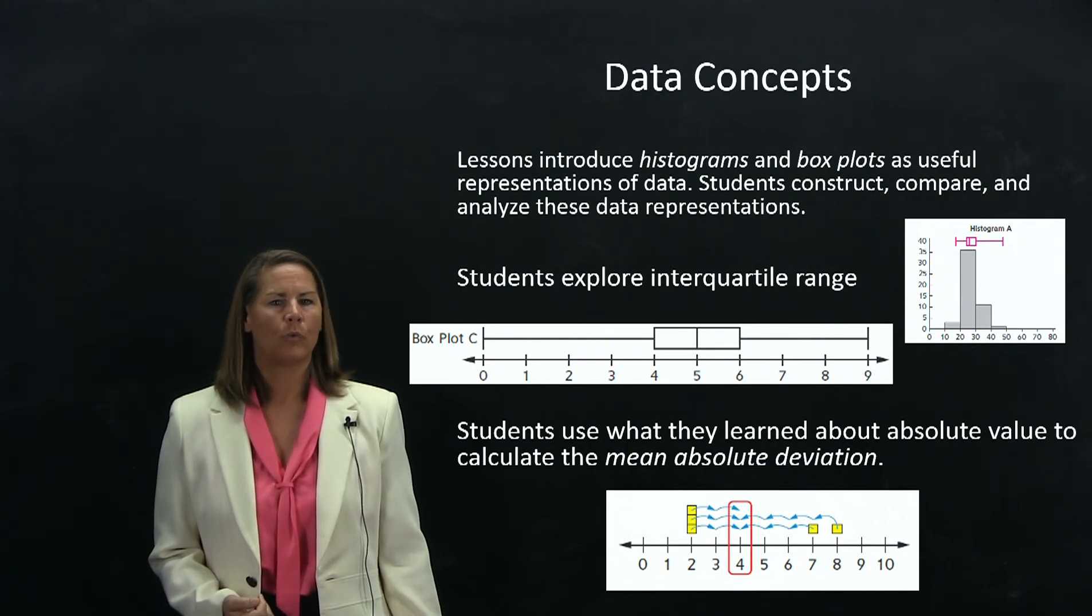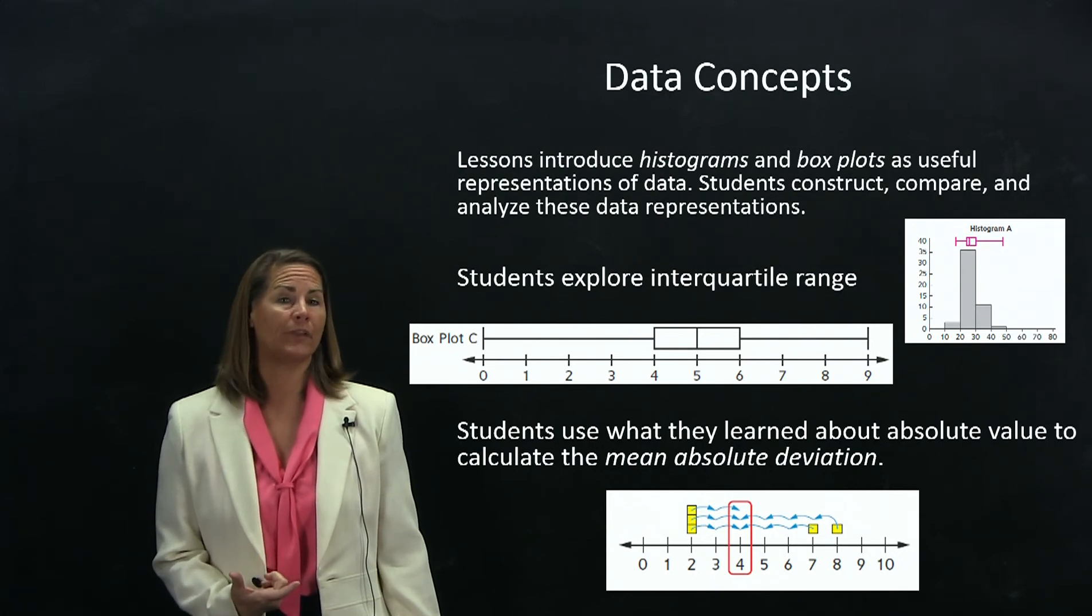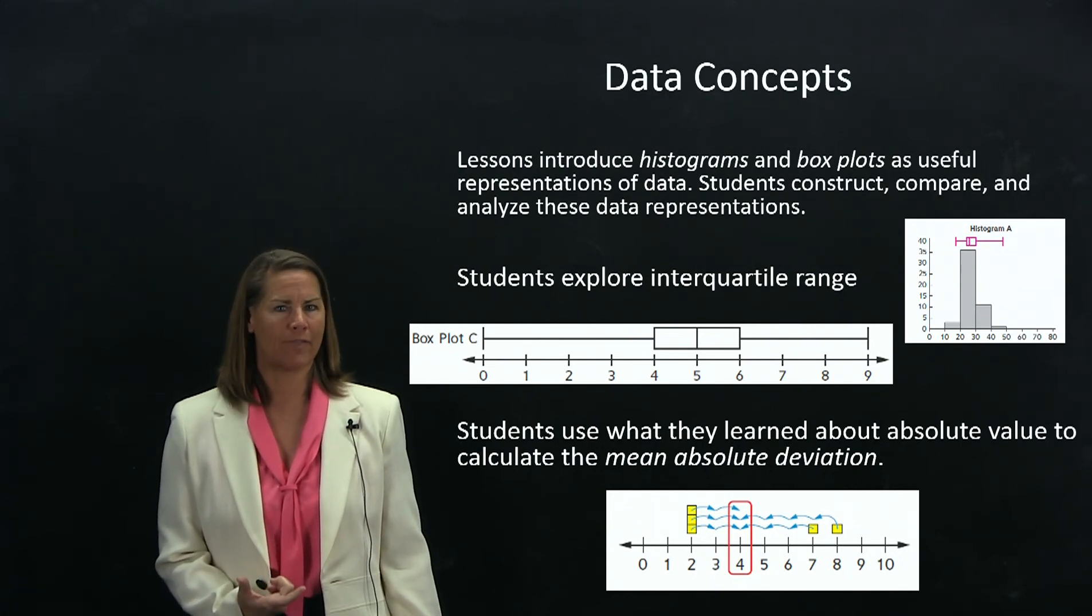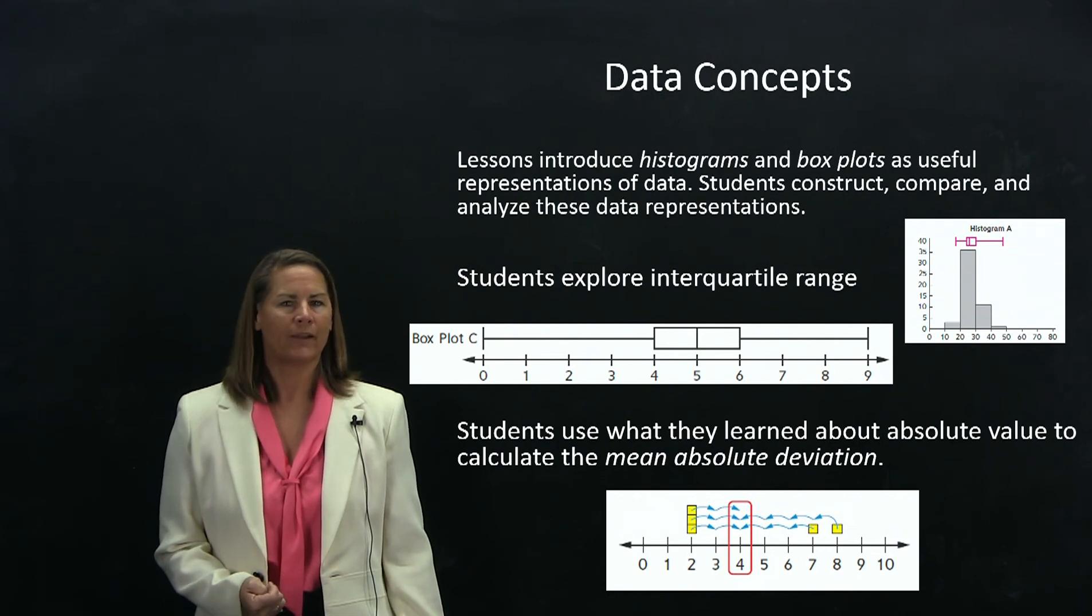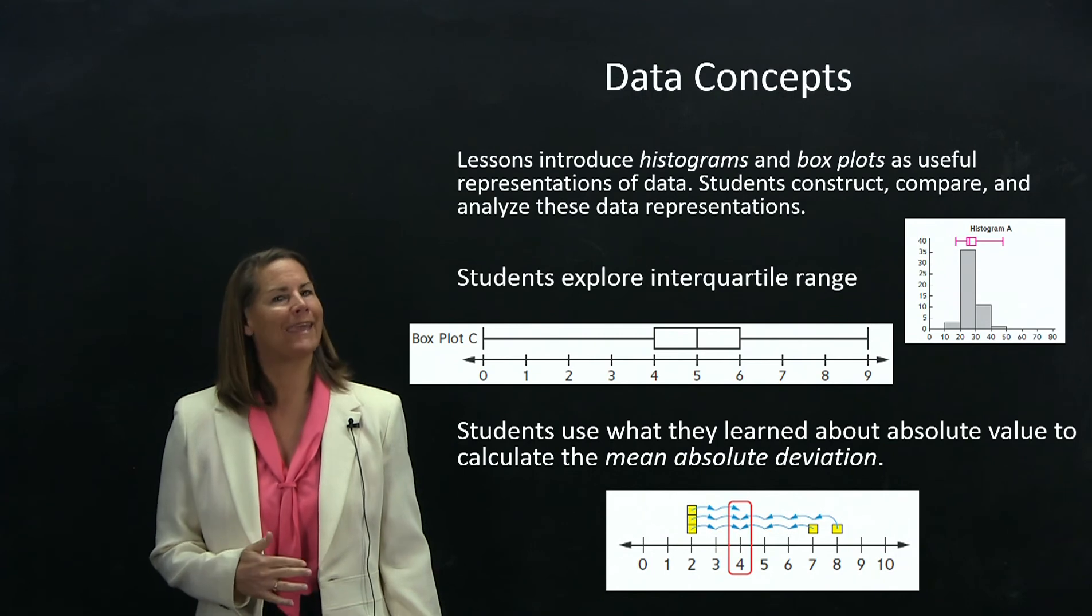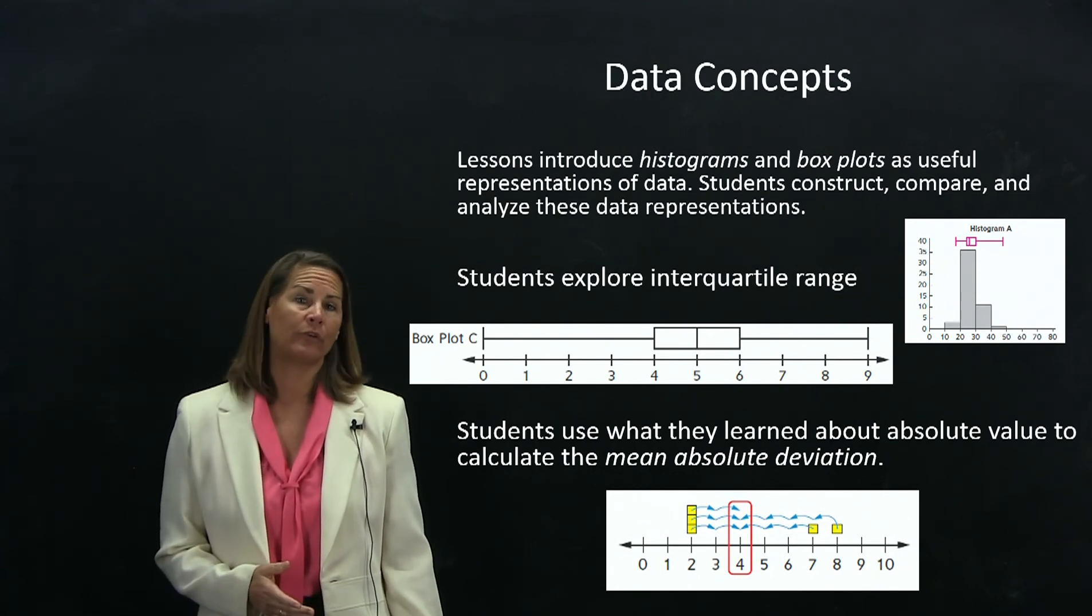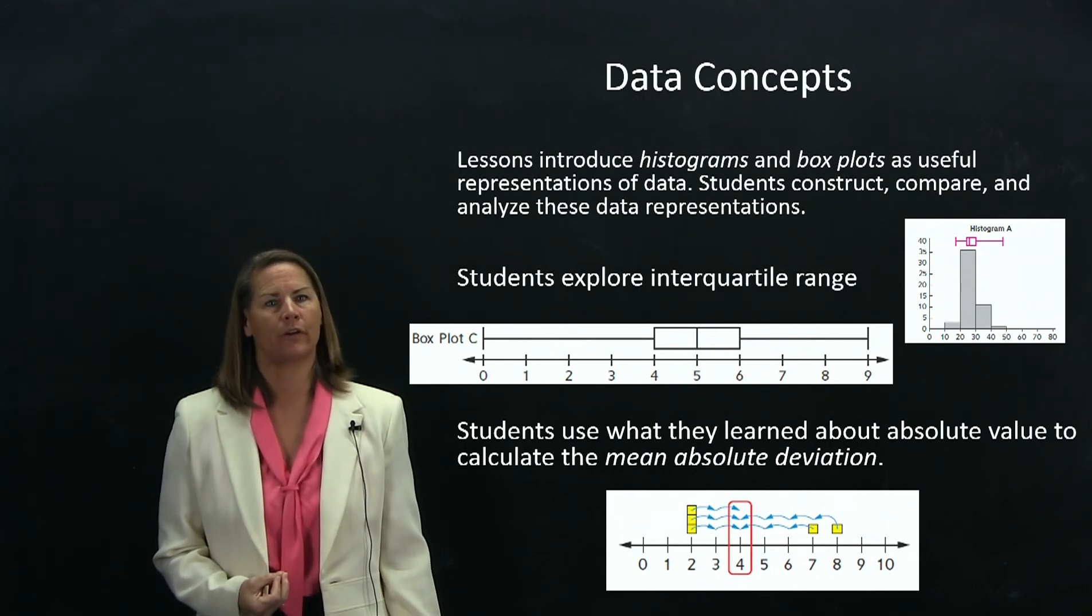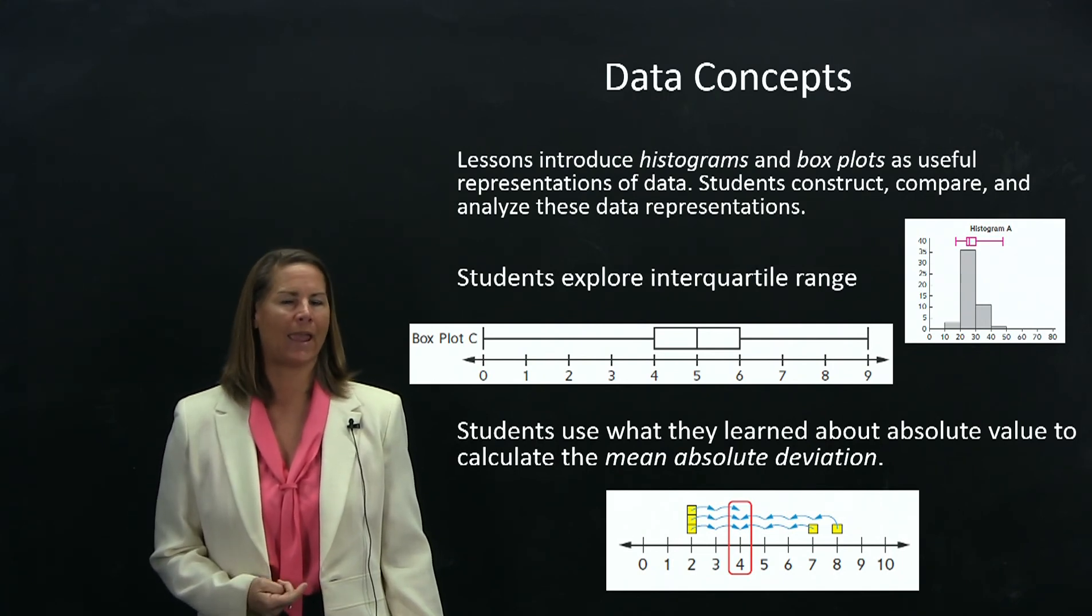Also, interquartile range, which if you see that box on the box plot, helps you know about the length of that box, which represents 50% of the data set. The interquartile range tells you something about the length of that box. Finally, we introduce mean absolute deviation, or MAD, where you actually are finding the average distances of all of the data points from the mean. This tells you if the data is all clustered around the mean, which means you'd have a very small mean absolute deviation, or whether the data points are spread out around the mean, which is going to give you a larger mean absolute deviation.